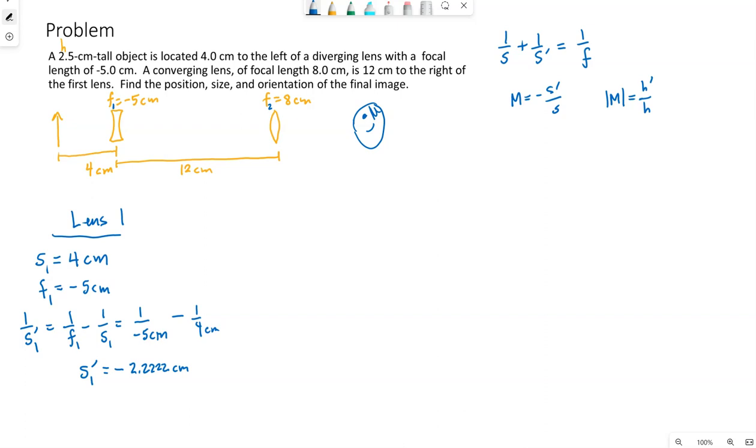The magnification of this first lens is this image distance over the object distance. So positive 0.5555.